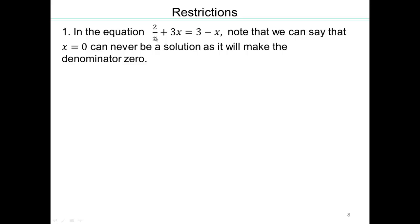We already know we cannot divide by 0 denominators. So in this case, the denominator x cannot equal 0. So x equals 0 can never be a solution as it will make the denominator 0.